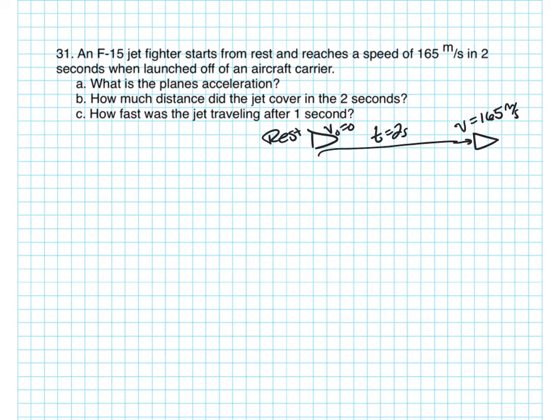Let's list our givens next. Alright, starting with the givens. We know the initial velocity is equal to zero. We know the final velocity is equal to 165 meters per second. We know the time is equal to 2 seconds. And we're looking for the acceleration.